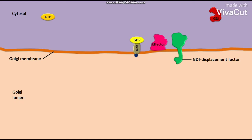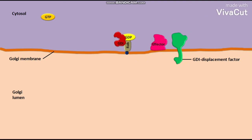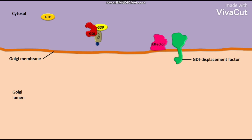The removal of inactive Rab-GDP from the GDI frees the GDI. As the membrane has no Rab-GEF in this case, the freed cytosolic GDI then binds to the Rab-GDP, removes it from the membrane, and carries it to another membrane.